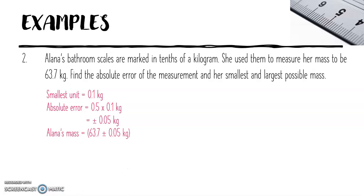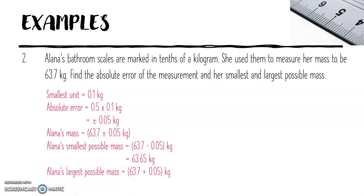Alana's mass is 63.7 plus or minus 0.05 kilograms. Alana's smallest possible mass is 63.7 minus 0.05 kilograms, which equals 63.65 kilograms. Alana's largest possible mass equals 63.7 plus 0.05 kilograms, which equals 63.75 kilograms.